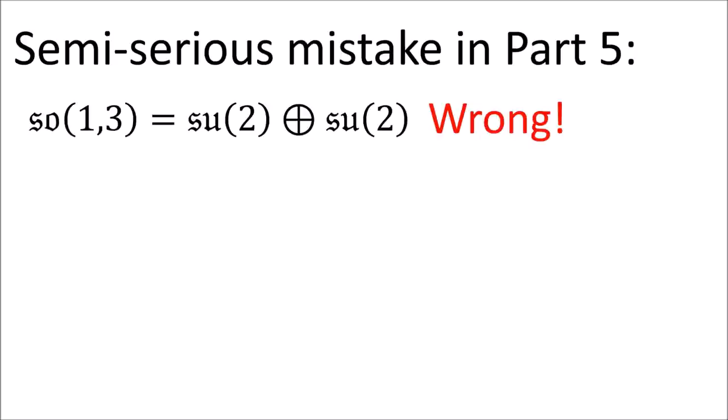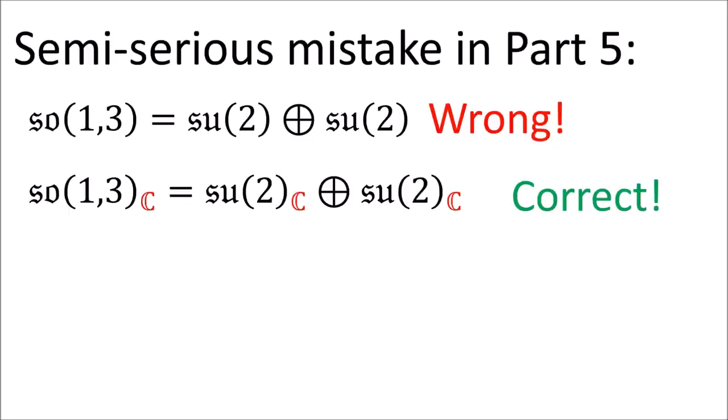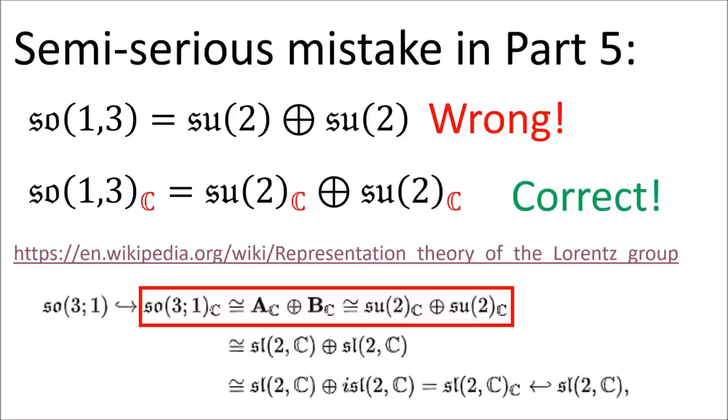I say that the Lie algebra so(1,3) is the direct sum of two copies of SU(2), and this is actually not correct. It's only correct if these Lie algebras are complexified. And Wikipedia's article on the representation theory of the Lorentz group explains all of this.